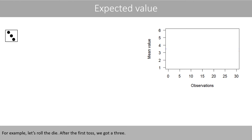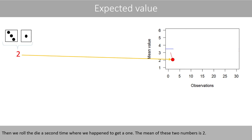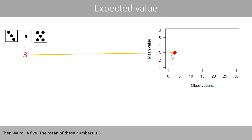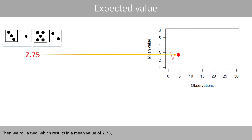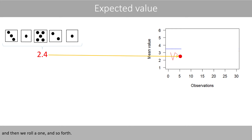For example, let's roll the die. After the first toss, we got a 3. We can show that number in the following plot. Then we roll the die a second time where we happen to get a 1. The mean of these two numbers is 2. Then we roll a 5 — the mean of these numbers is 3. Then we roll a 2, which results in a mean value of 2.75. And then we roll a 1, and so forth.